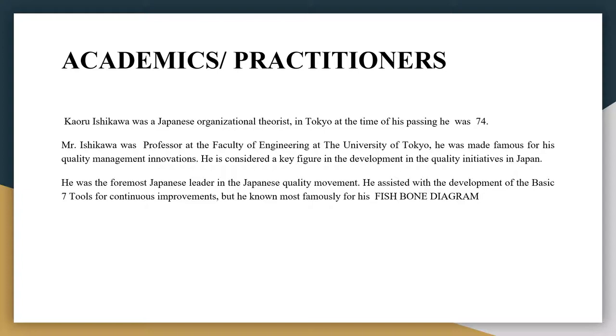Mr. Kaoru Ishikawa was a Japanese organizational theorist in Japan, and at the time of his passing he was 74.